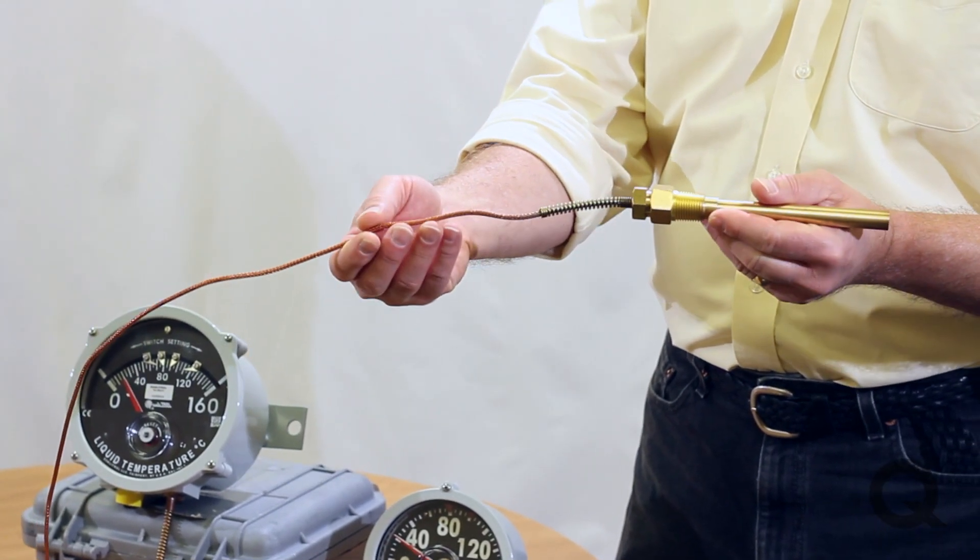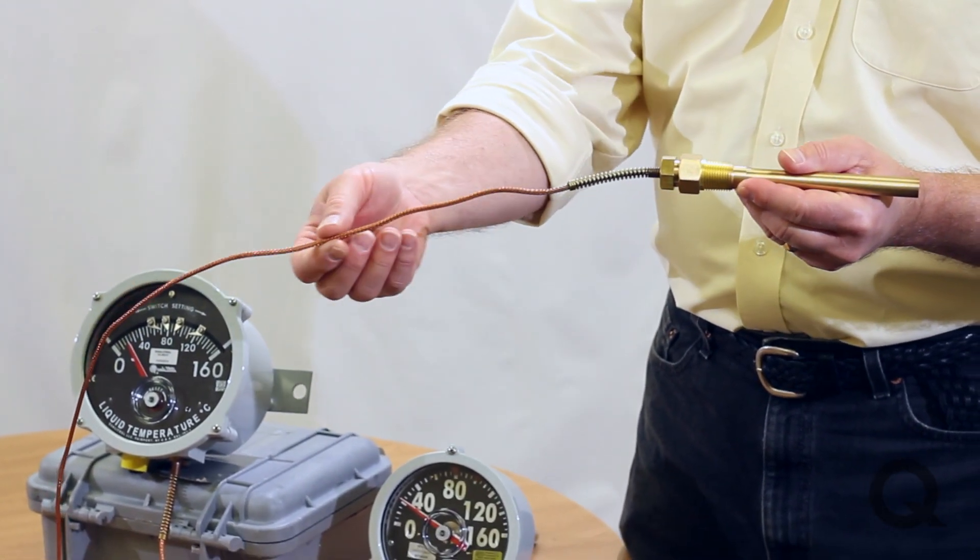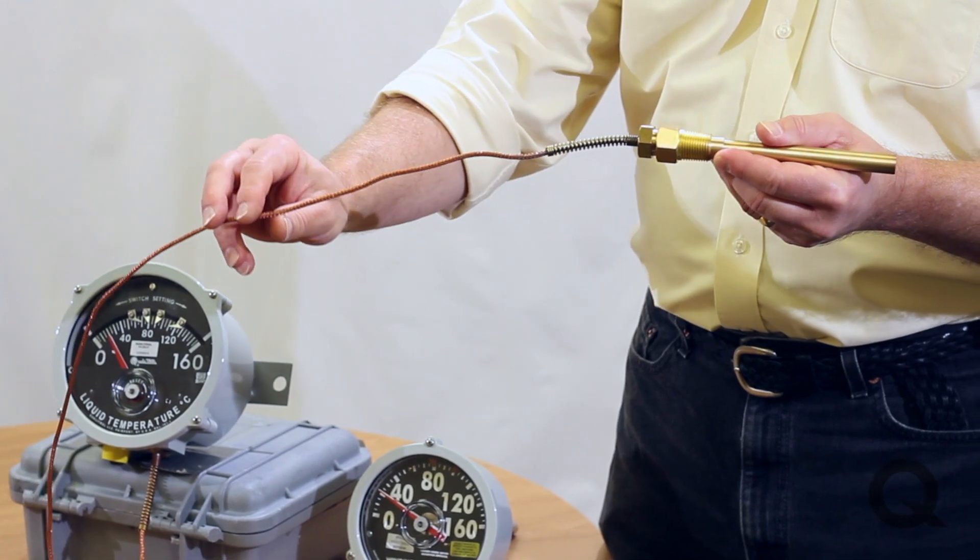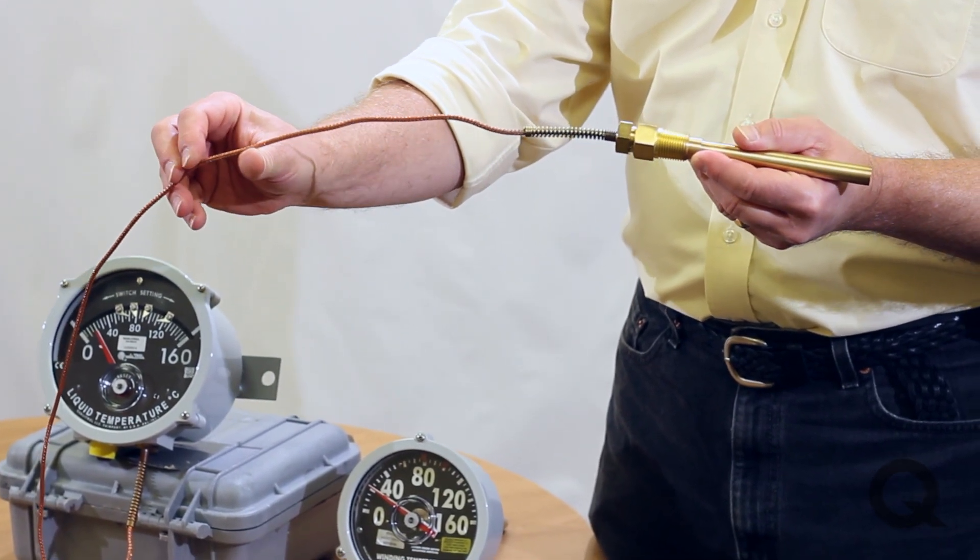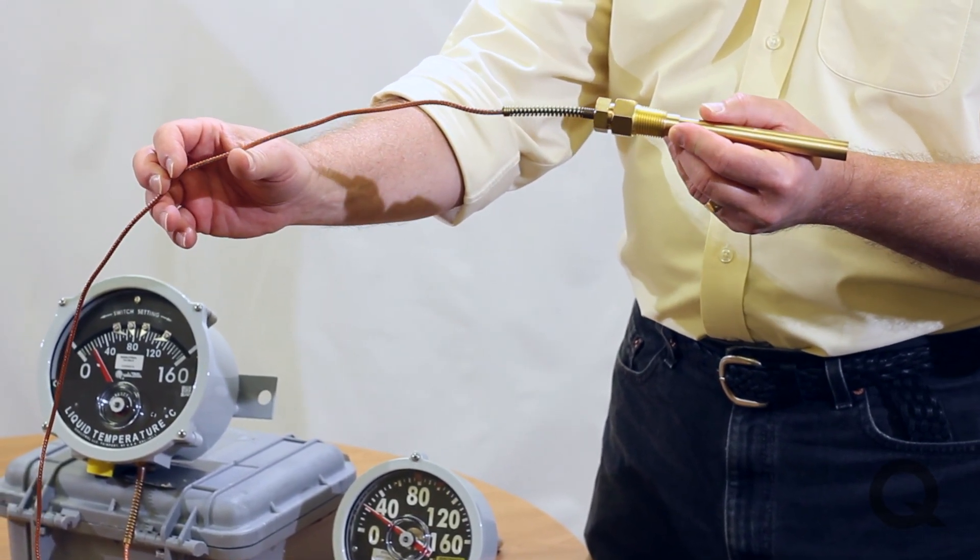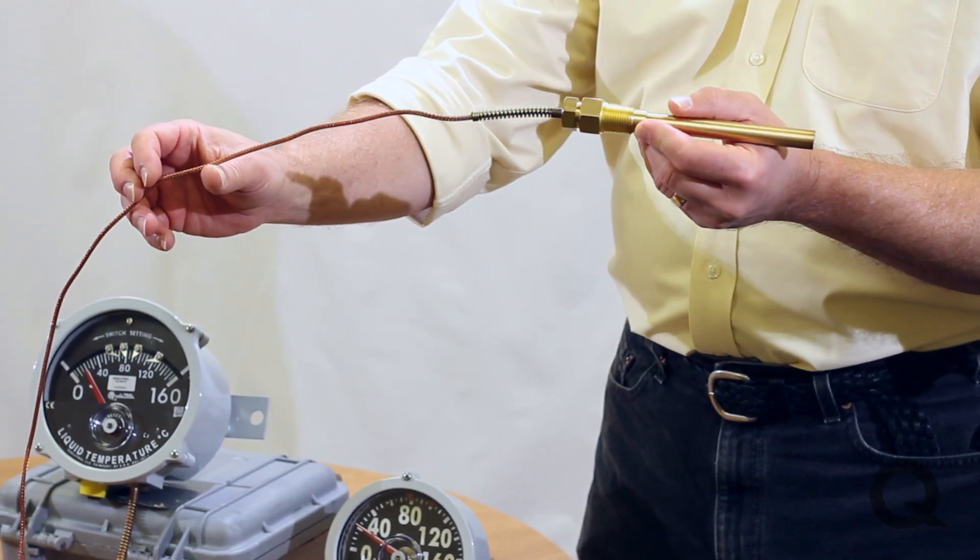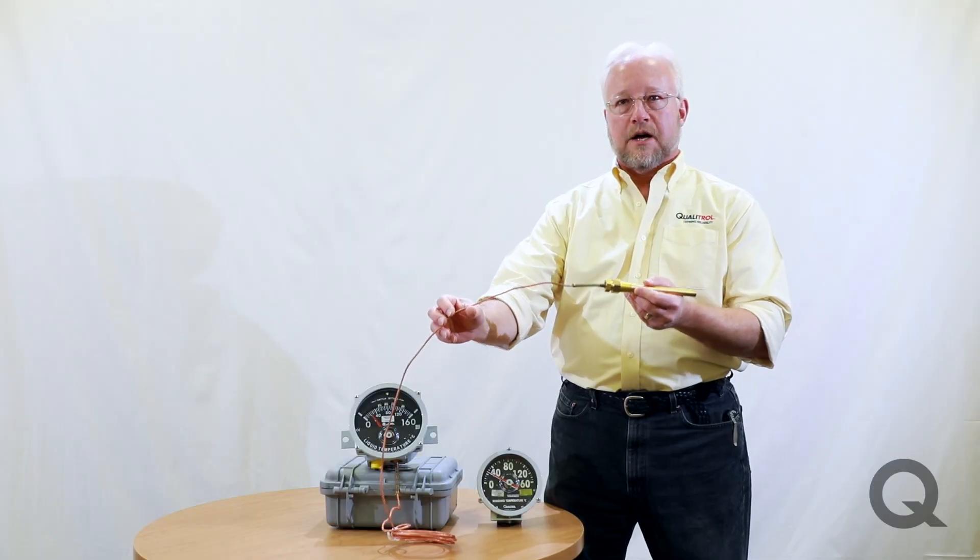The other thing with the capillaries is that you want to be careful with the capillaries. Do not bend them tighter than the radius of a full can of Coca-Cola. If you kink the capillary, if you cut the capillary, the thermometer is going to be ruined. So you don't want to do that.